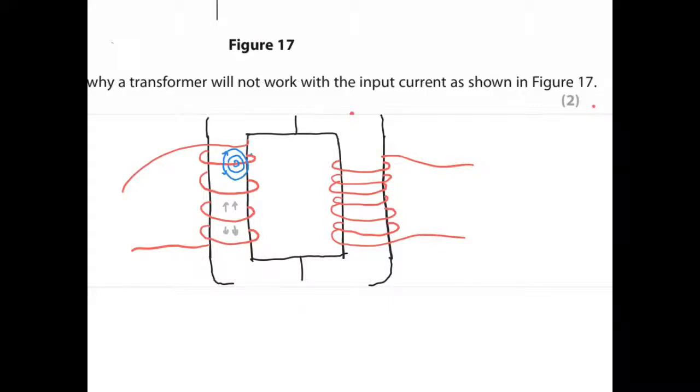Basically you need a changing current, so a current that flows in one direction and the other direction to induce a changing magnetic field.